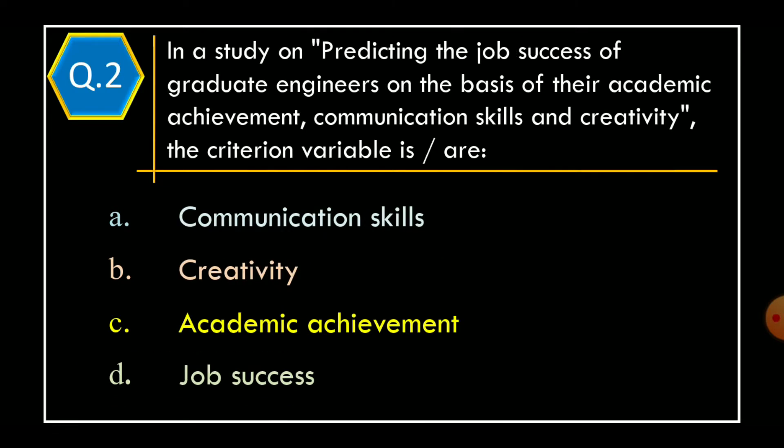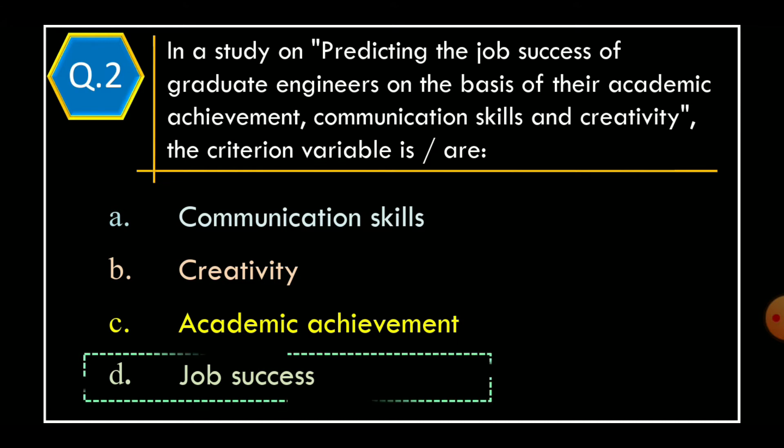Question 2. In a study on predicting the job success of graduate engineers on the basis of their academic achievement, communication skills, and creativity, the criteria variable is or are: Option A, communication skills; Option B, creativity; Option C, academic achievement; Option D, job success. The correct option is Option D, job success.